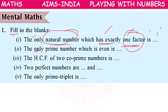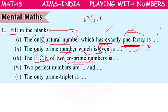The only prime number which is even: the prime numbers start from 2, 3, 5, 7, and so on. The only prime number which is even is 2. The HCF of two co-prime numbers: because co-prime numbers have only 1 as their common factor, their HCF is 1.